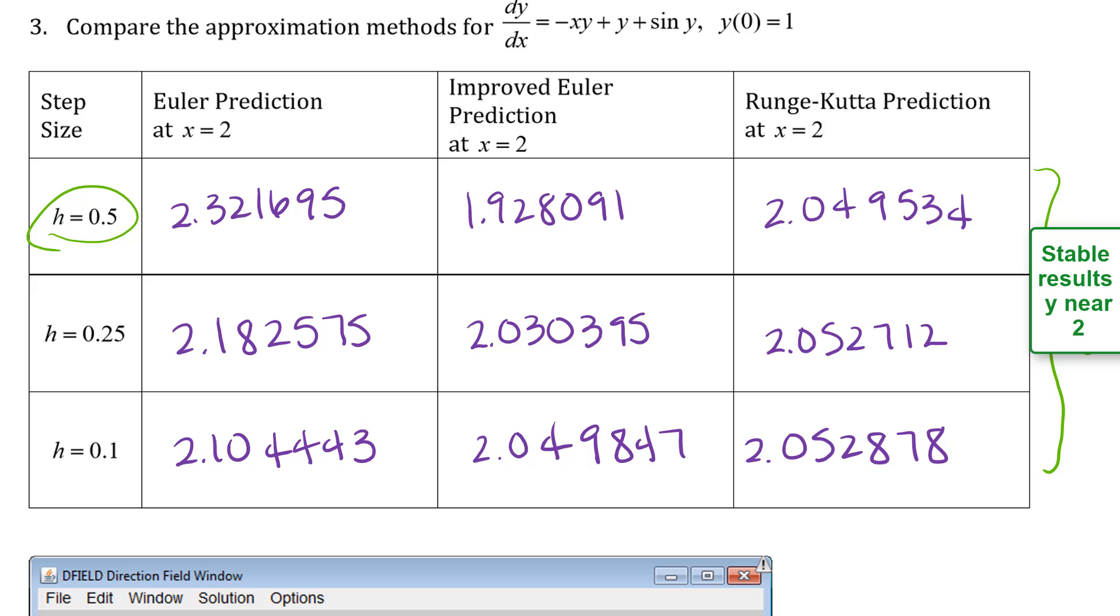We should expect that the Runge-Kutta approximation would be better than the Euler approximation. And the improved Euler approximation would be somewhere in the middle. And so probably in this chart, I would expect that the Runge-Kutta method with the smallest step size should be the most accurate. I will point out though that even for the large step size, h equals 0.5, that Runge-Kutta method is pretty darn close. Those both round to approximately 2.05 for two decimal places of accuracy. So these are all fairly stable results. They seem pretty believable based on that numerical approximation and the fact that I'm getting similar results for a variety of methods and a variety of step sizes.